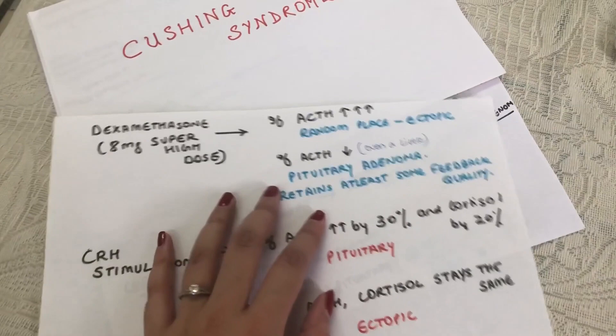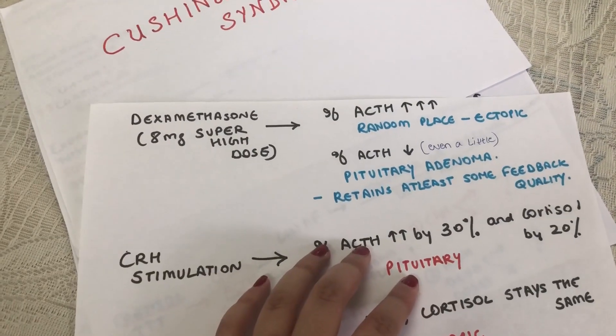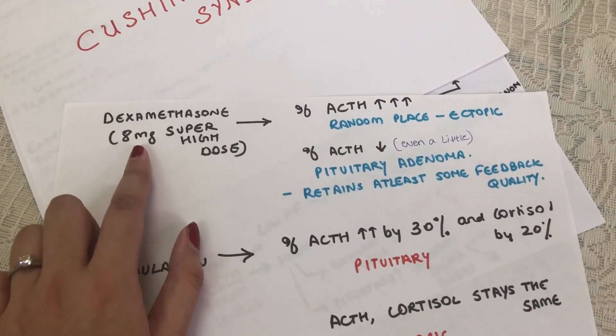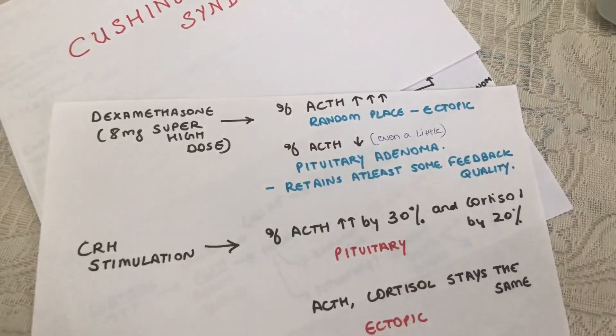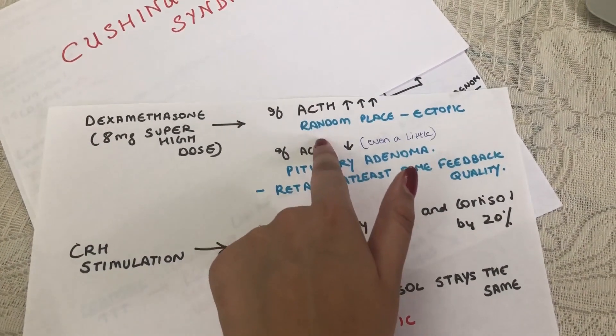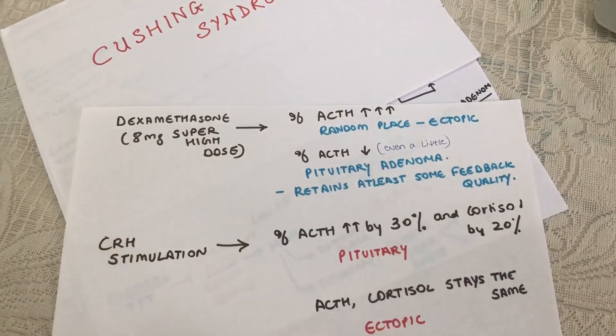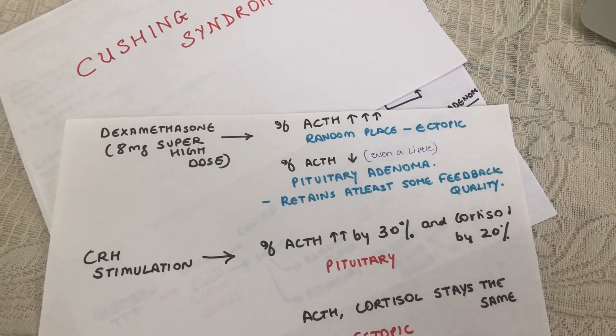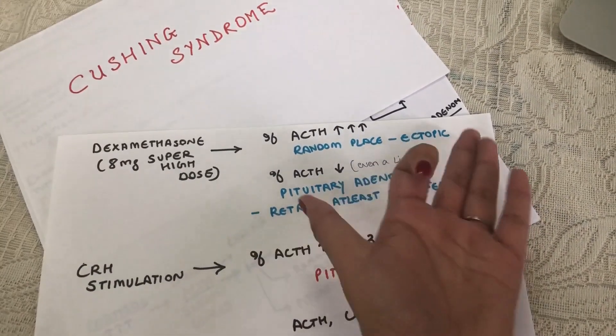The dexamethasone super high-dose test: you infuse the patient with an 8 milligram super high dose of cortisol from outside and see the ACTH levels. If the ACTH levels continue to be super high and they do not respond even 1% to the dexamethasone, that means you know for sure that it's being secreted from an ectopic source, either a lung or bronchioles.